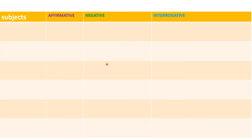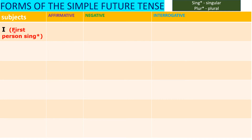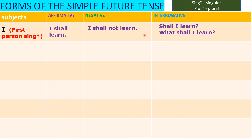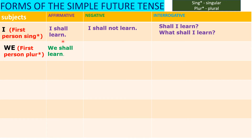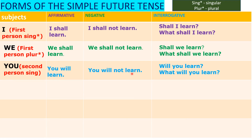Now let's see the conjugation. First person singular: 'I shall learn.' Negative: 'I shall not learn.' Question: 'Shall I learn?' Wh-question: 'What shall I learn?' First person plural: 'We shall learn.' Negative: 'We shall not learn.' Question: 'Shall we learn?' Wh-question: 'What shall we learn?' Second person: 'You will learn.'